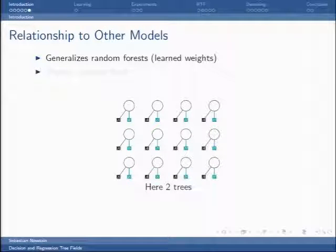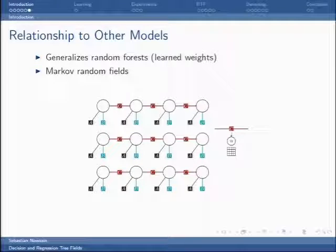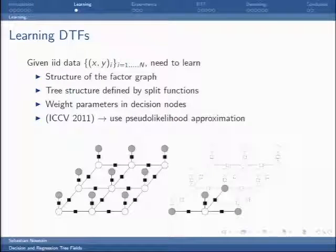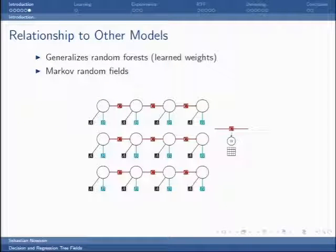This generalizes the unary random forest you normally see and people use these. It generalizes random forest. It's just a tree that has a depth one. It doesn't make any test based on the image. The more flexible idea is to have a tree for these interactions and then the model becomes really expressive.